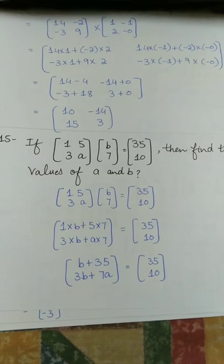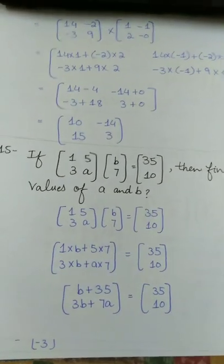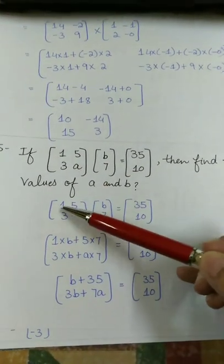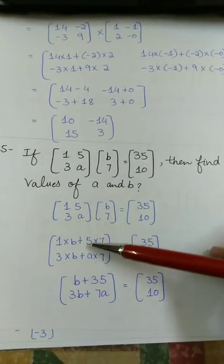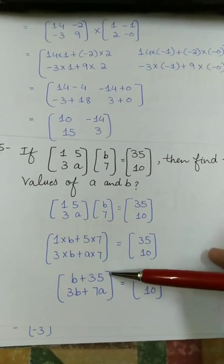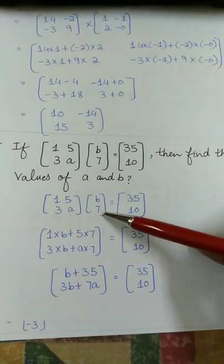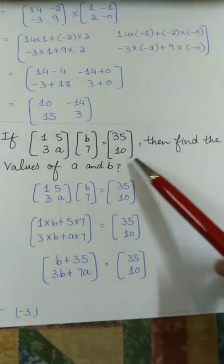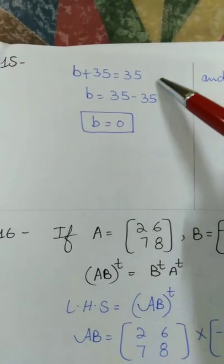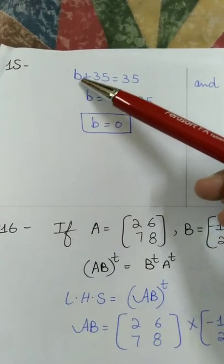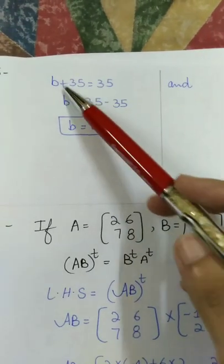This question is simple. You will find the values. So what do you do? First of all, [1 5] multiplied by [3 a] and [b 7].